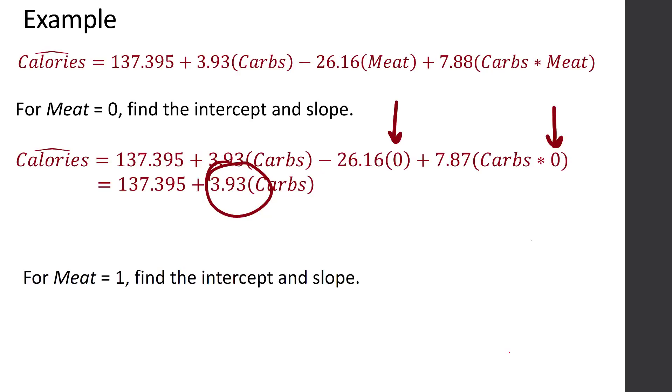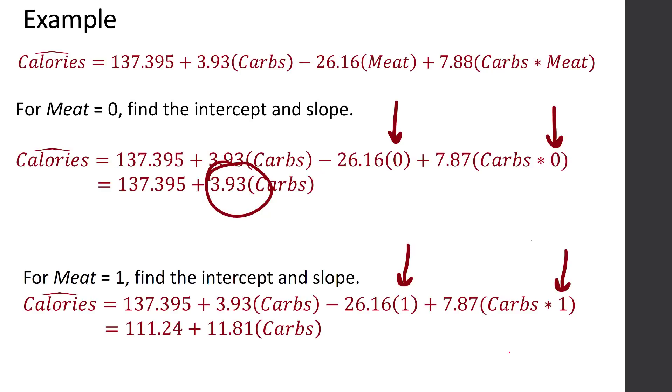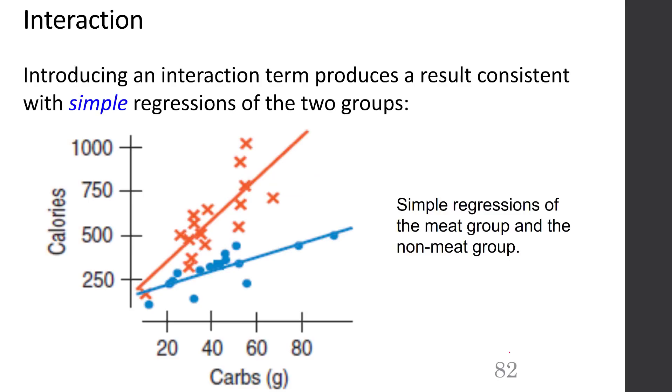Now let's play the same game for meat equals 1. We're going to start with our regression equation, plugging 1 in for meat this time. We've got it on the meat term, and we've also got it on the interaction between carbs and meat term. This time, we're going to combine the 3.93 carbs plus the 7.87 carbs to get 11.81 carbs. And we're going to combine our two constants, 137.395 minus 26.16 to get an intercept of 112.24. When meat is 1, our slope is much steeper. It's 11.81 rather than when meat equals 0, it was 3.93. We can see this in our picture of our separate regression lines. The meat line is much steeper, and the non-meat line on the bottom is much more flat. That's how the math works out with the picture.